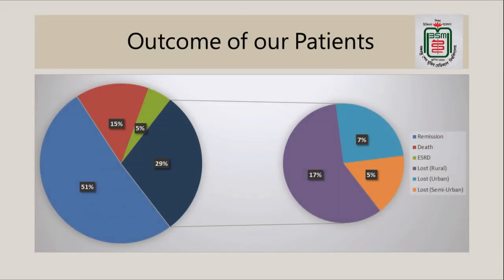Regarding outcomes: 51% of patients went into remission, 15% died, ESRD developed in 5%, and 29% were lost to follow-up. This loss to follow-up is likely to increase in the future. Of that 29%, 17% were from rural areas, so patients from rural areas are more prone to being lost to follow-up.